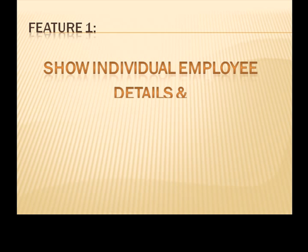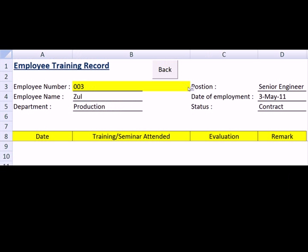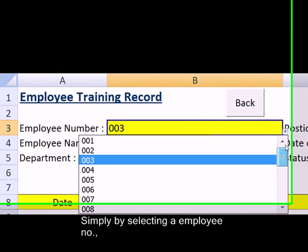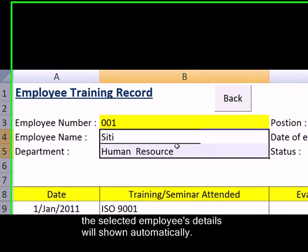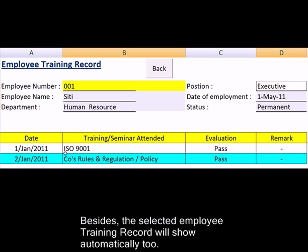Feature 1: Show individual employee details and training record automatically. Simply by selecting an employee number, the selected employee's details will show automatically. Besides, the selected employee's training record will show automatically too.